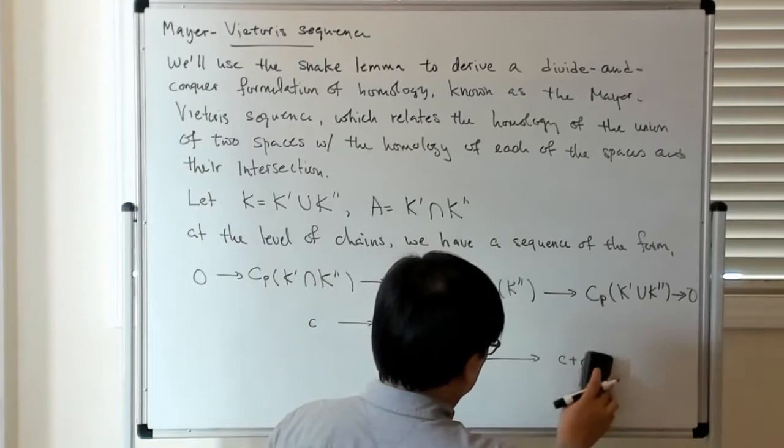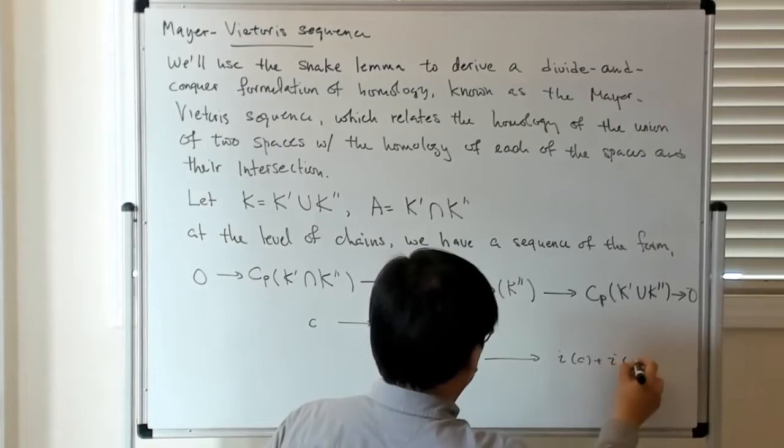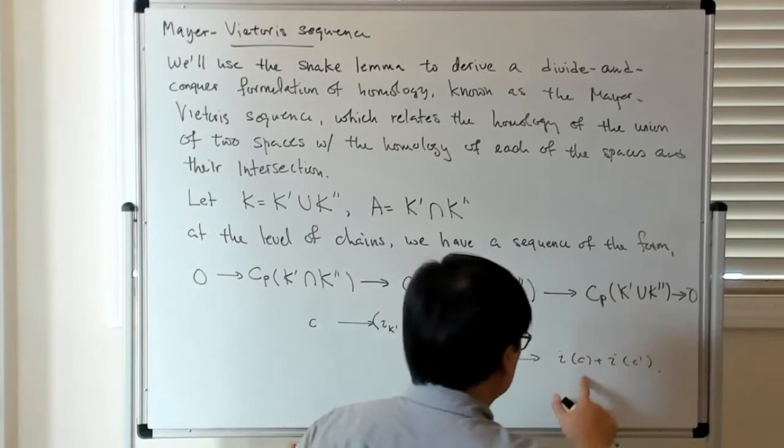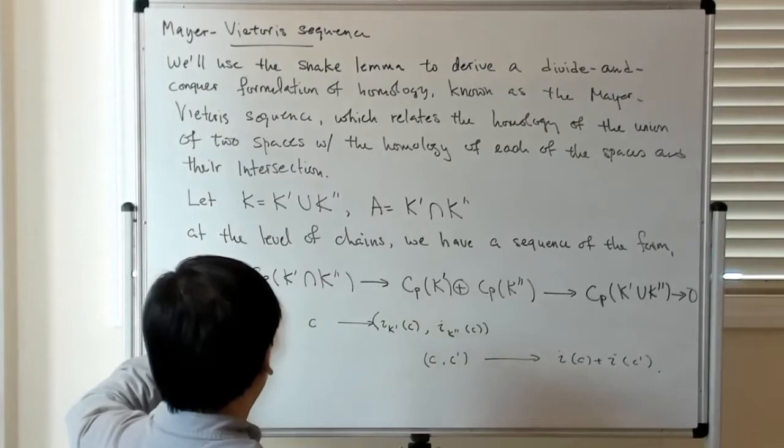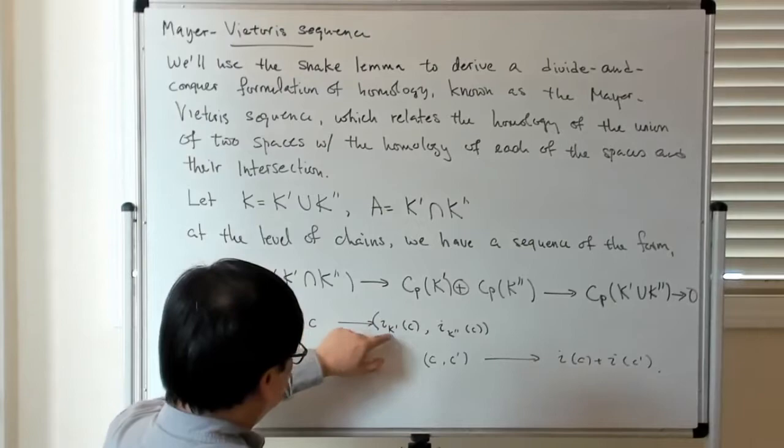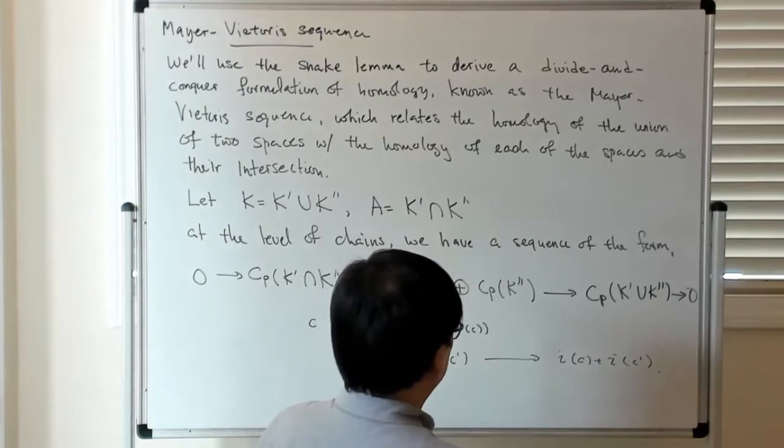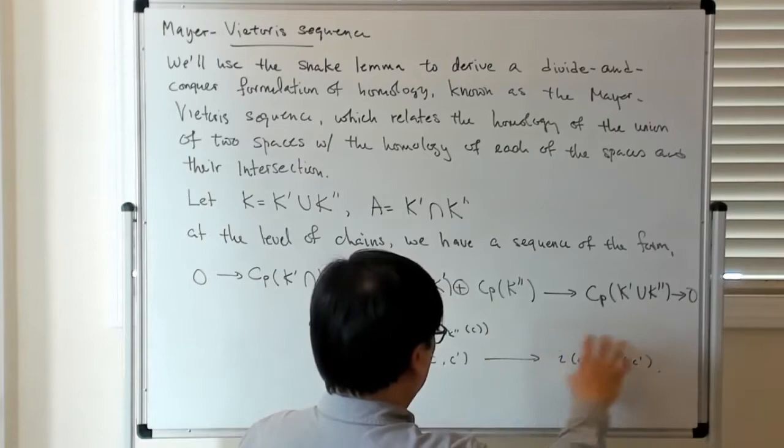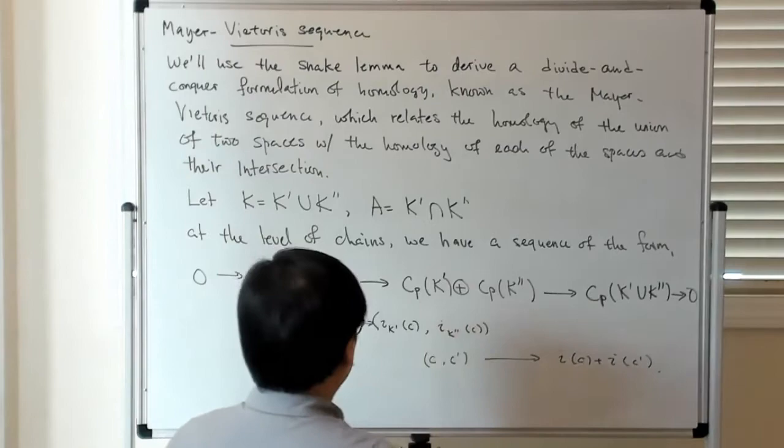And then what this map does is to take C and C prime and it maps it to C plus C prime, which you can do obviously. So there's an inclusion of C plus the inclusion of C prime. So you have to include K prime and K double prime into the union. So it's clear that this part of the map is one-to-one, and it's easy to convince yourself that this part of the map is onto.